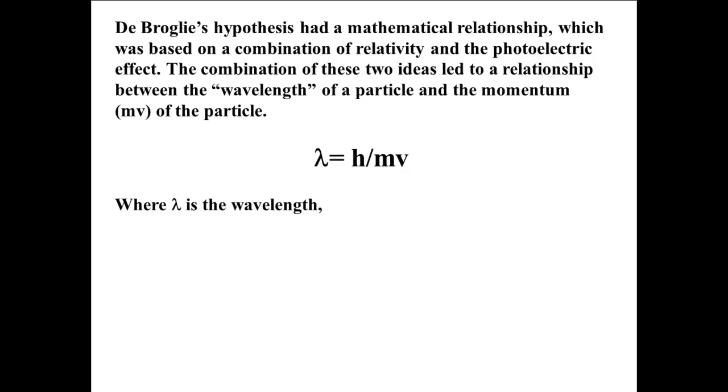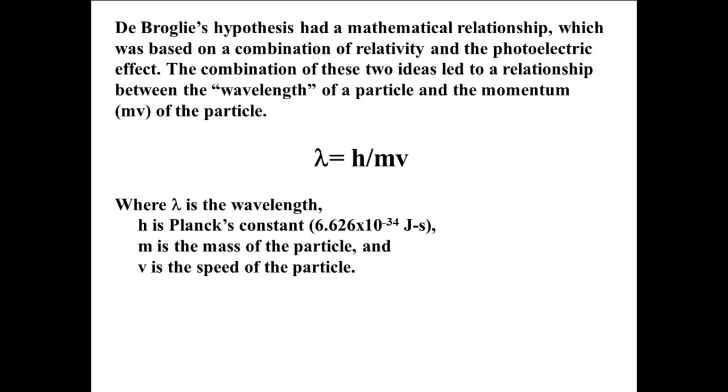Where lambda is the wavelength, h is Planck's constant, the value of which is 6.626 times 10 to the minus 34th joule seconds, m is the mass of the particle, and v is the speed of the particle.